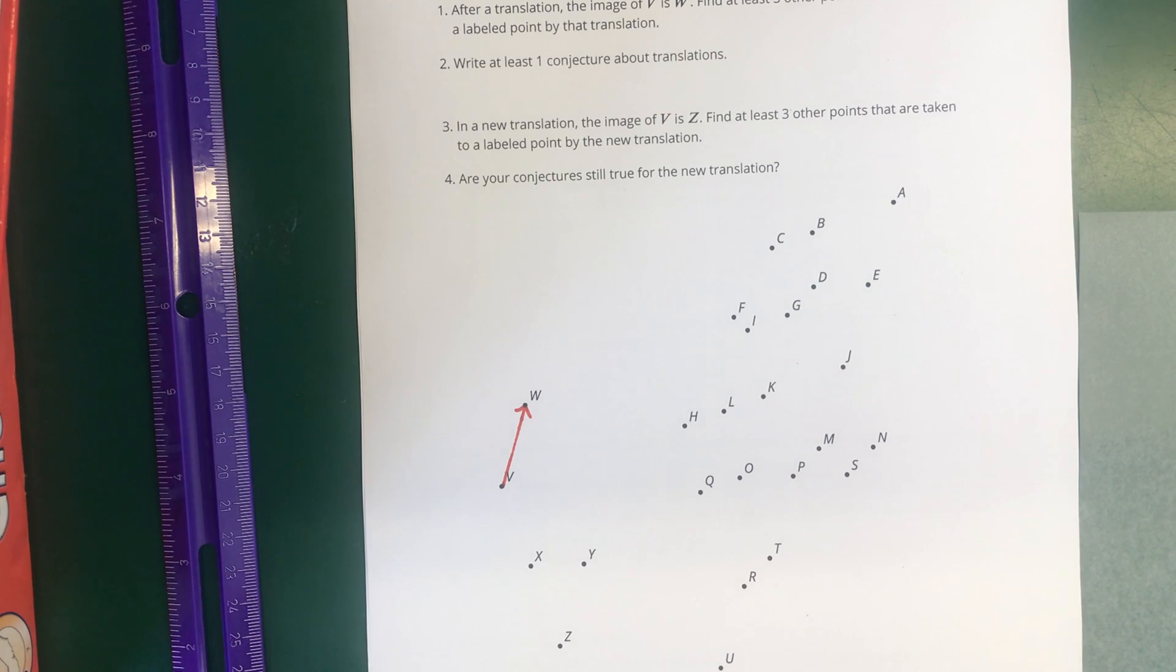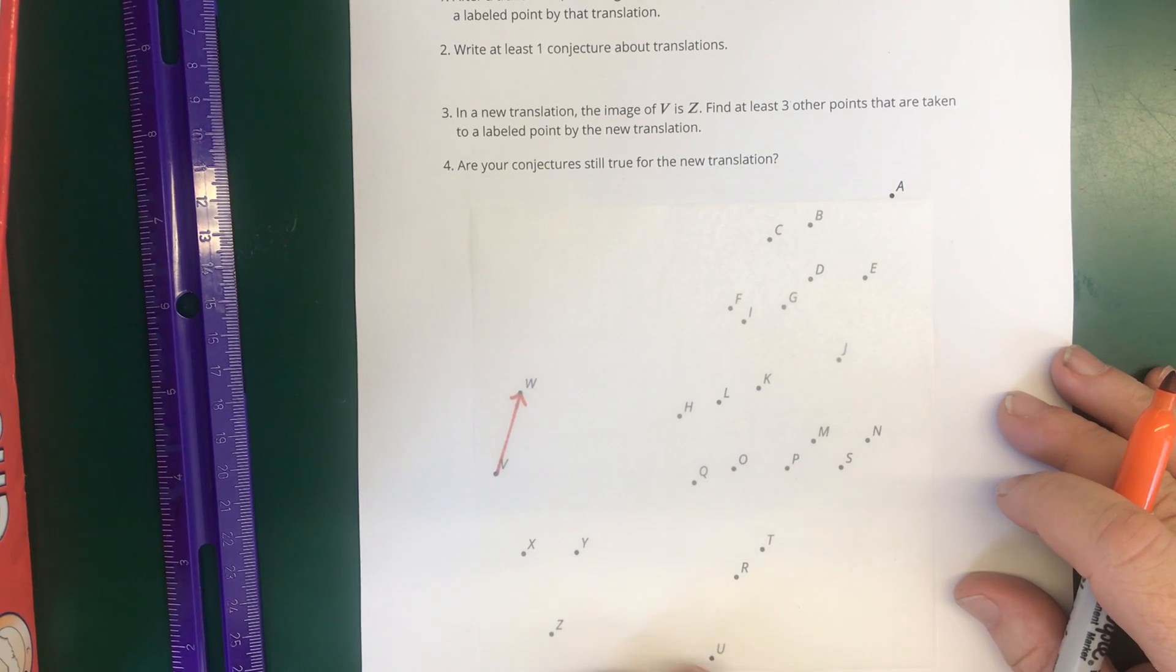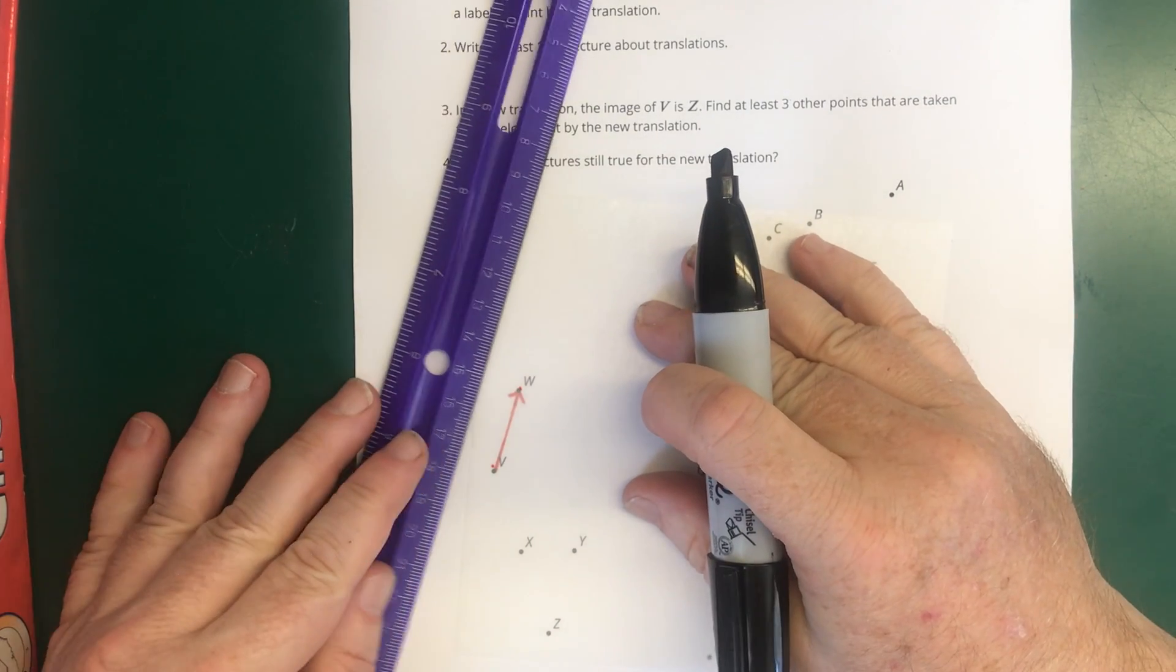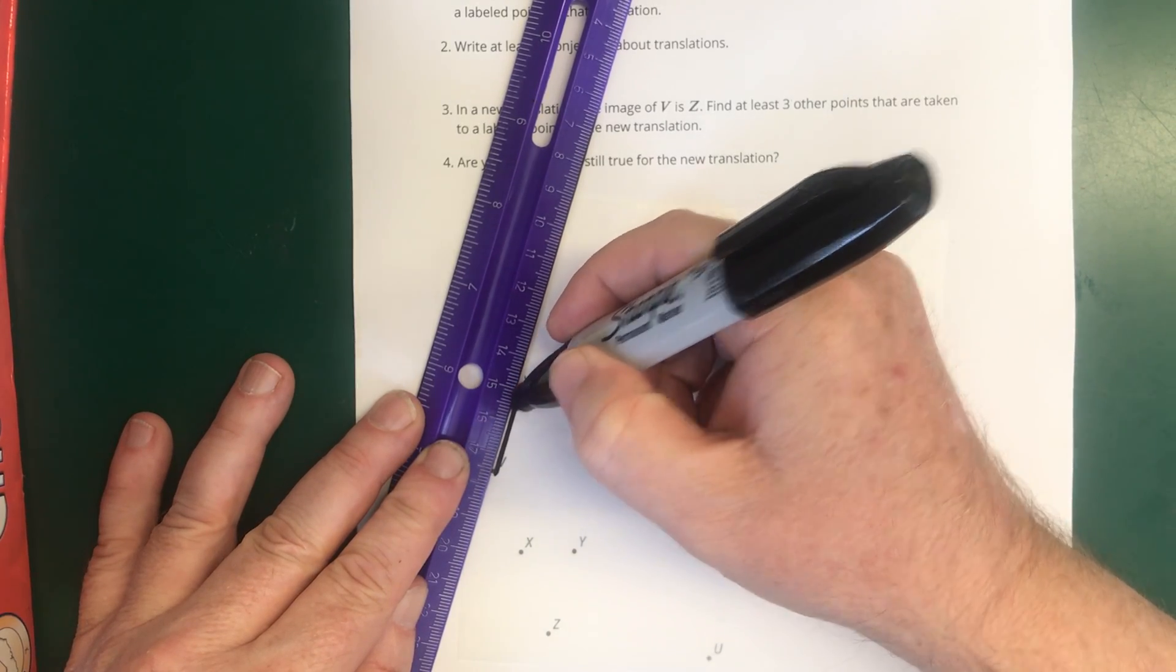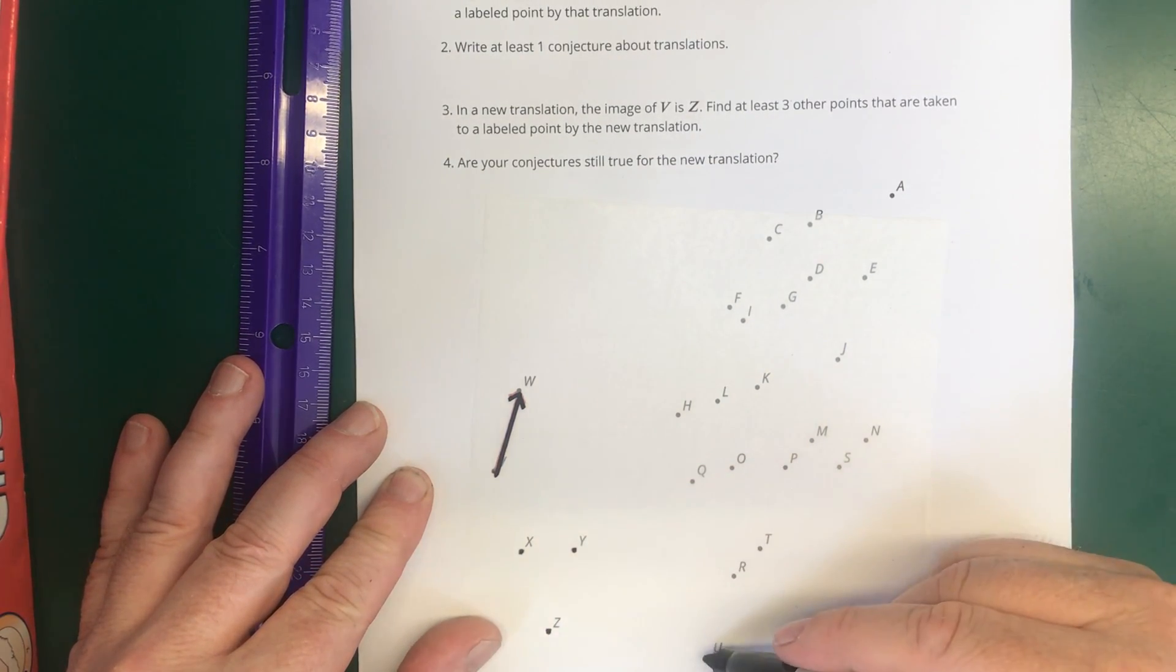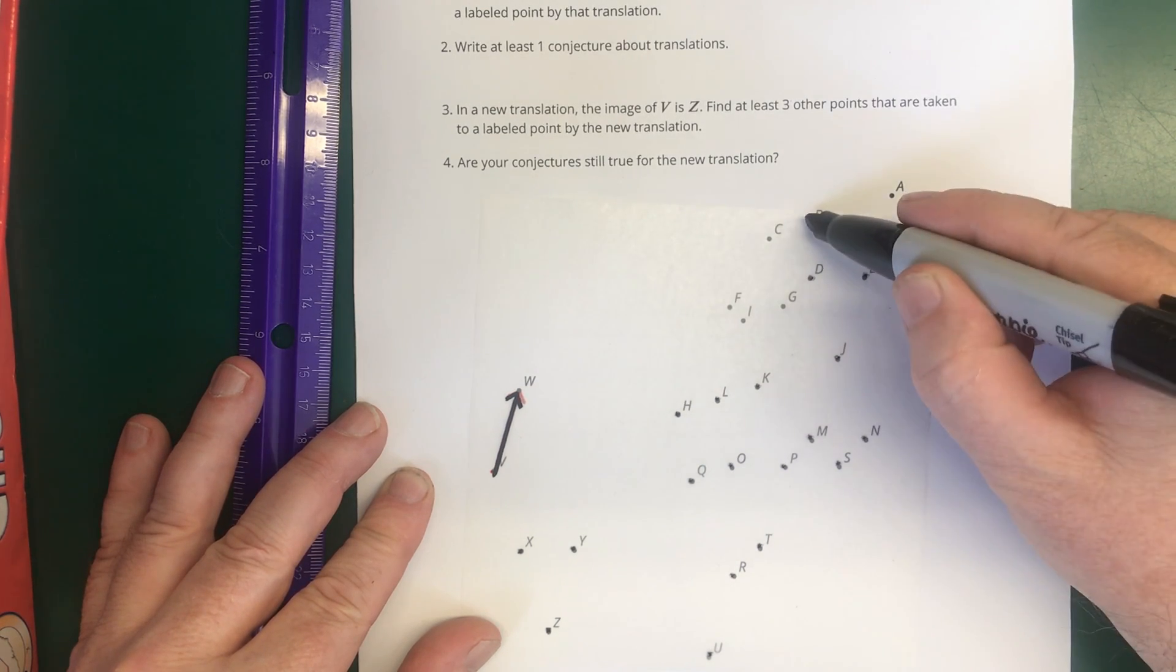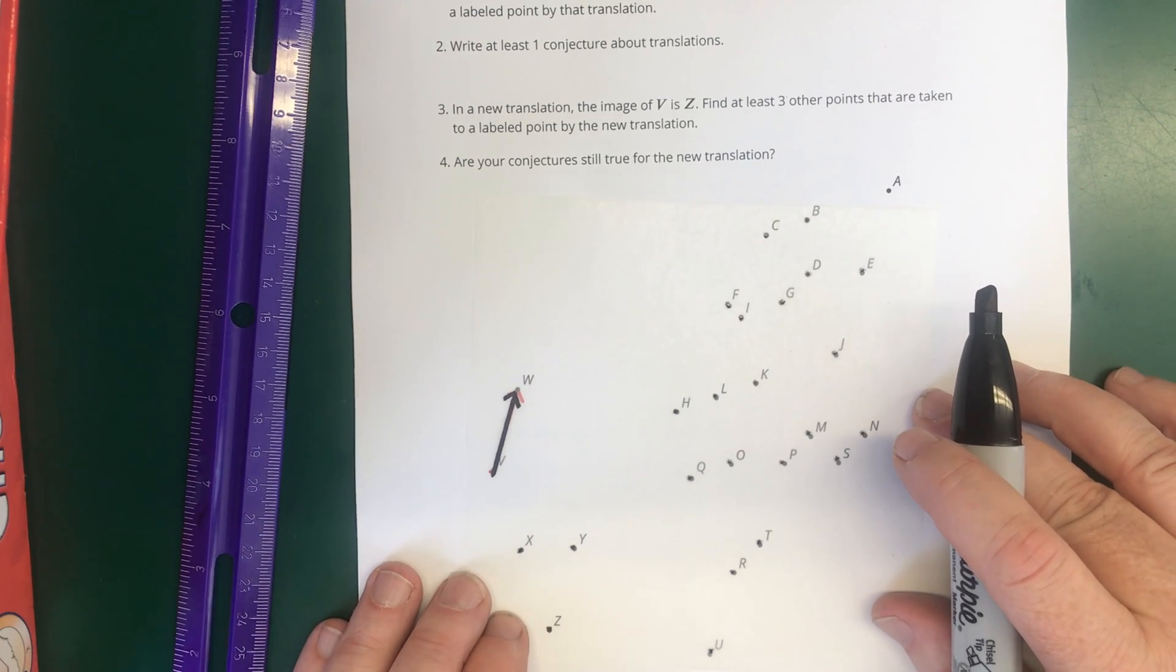So we want to do this translation on all these points and see if we can find at least three other points where we can find their images. So I'm going to trace V and W. Let me change colors. Let's try black. So on my tracing paper, I'll put the same arrow, V to W. And then I'm going to just trace a whole bunch of these other points. I'm not going to write the letters right now. I'm just going to mark the points. If we find any of these points that wind up on other points, then we'll look up which points they were.